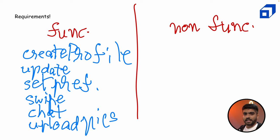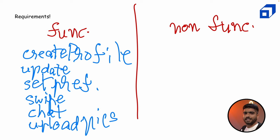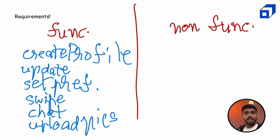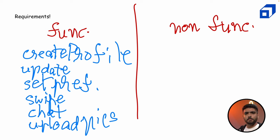We should be able to upload pics and we'll make design decisions about what data store to use for that. I think these functional requirements are sufficient to get started. There are other cool features like super like, seeing who liked you, or rewinding a profile — but those are generally premium features and not essential for our MVP, so we can ignore them for now.